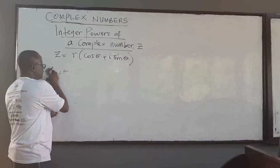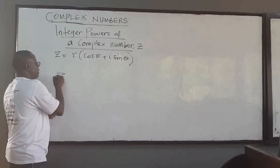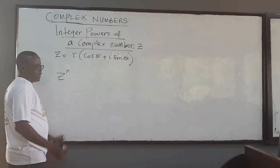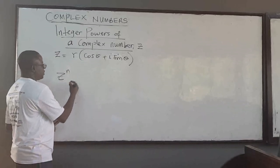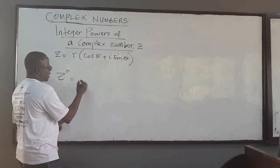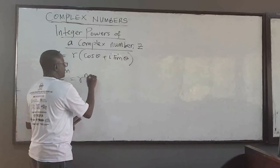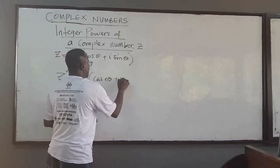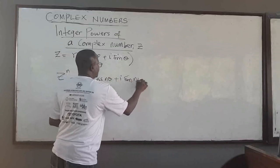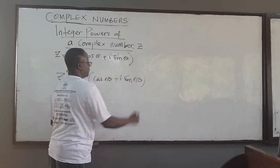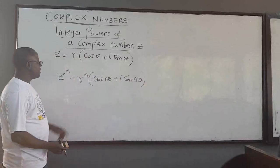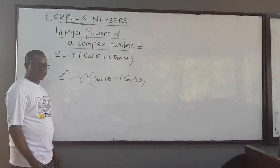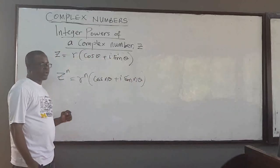You might have z raised to the power of any integer n — it could be 0, 1, negative 1, any integer. This can be written as r to the power n times (cos nθ + i sin nθ). You don't really need to expand; you just use this relationship, which is known as De Moivre's theorem.